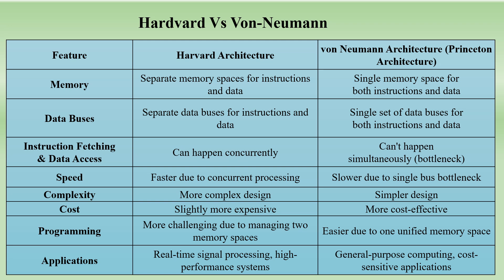For instruction fetching and data access: in Harvard architecture it happens concurrently, whereas in von Neumann it cannot happen simultaneously because there is only a single set of buses — only one operation at a time. Regarding speed: Harvard is faster because data processing is concurrent, while von Neumann is slower because it can send only one set of instructions at a time.